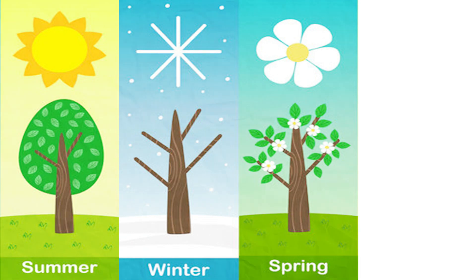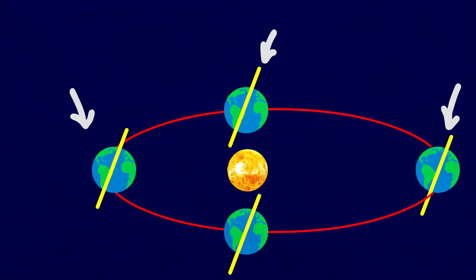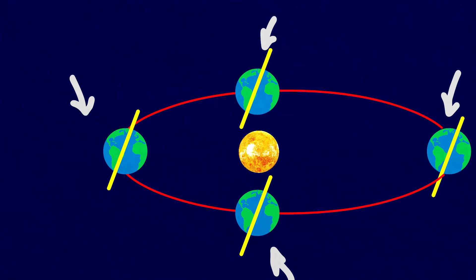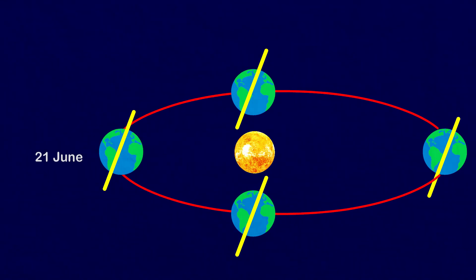A year is usually divided into summer, winter, spring, and autumn seasons. Seasons change due to the change in the position of the earth around the sun. Look at this figure: on 21st June, the northern hemisphere is tilted towards the sun.